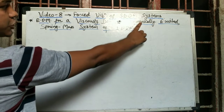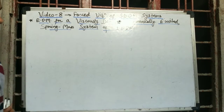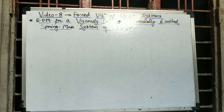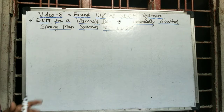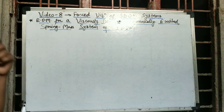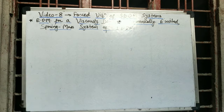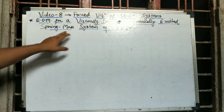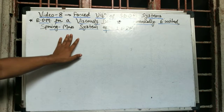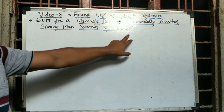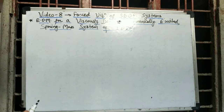What is the meaning of harmonic excitation? It means the system will be applied a harmonic force. What is the meaning of viscously damped? There will be a damper used in the system which will have viscous damping or oil damping. What is the meaning of spring-mass system? There will be a spring and a mass. And one degree of freedom means the system will have a single degree of freedom.